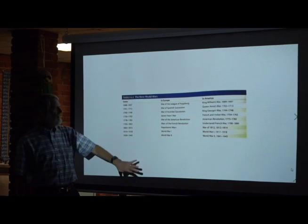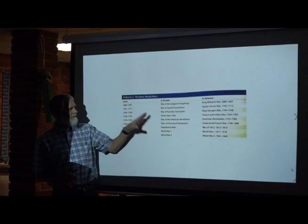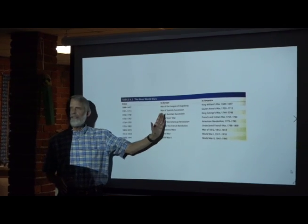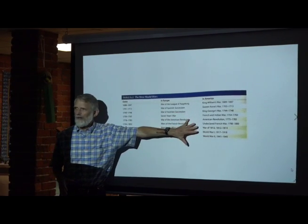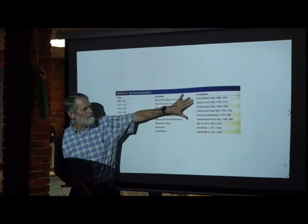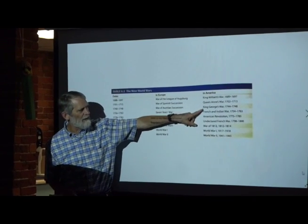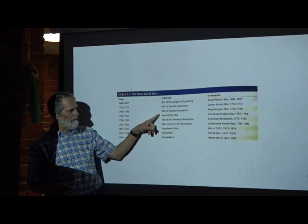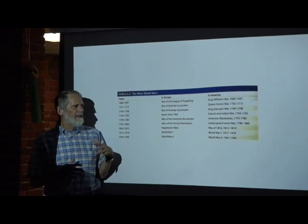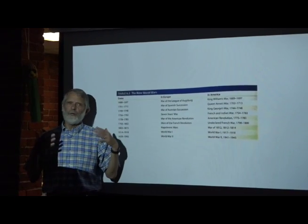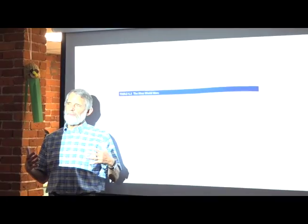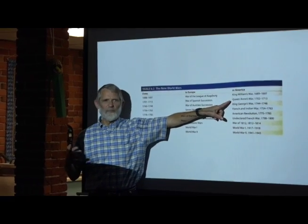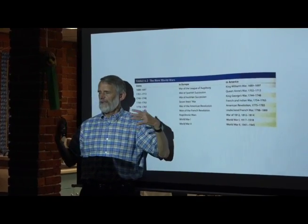On this chart, we have wars that have both a European name and an American name. The American names are basically based on who the king or queen in England is. But in Europe, they have a whole other name. That reminds us that when we were members of the British Empire in the early days, we were oriented to who the kings and queens of Britain were, so we referenced the king or queen of Britain when we had these wars.